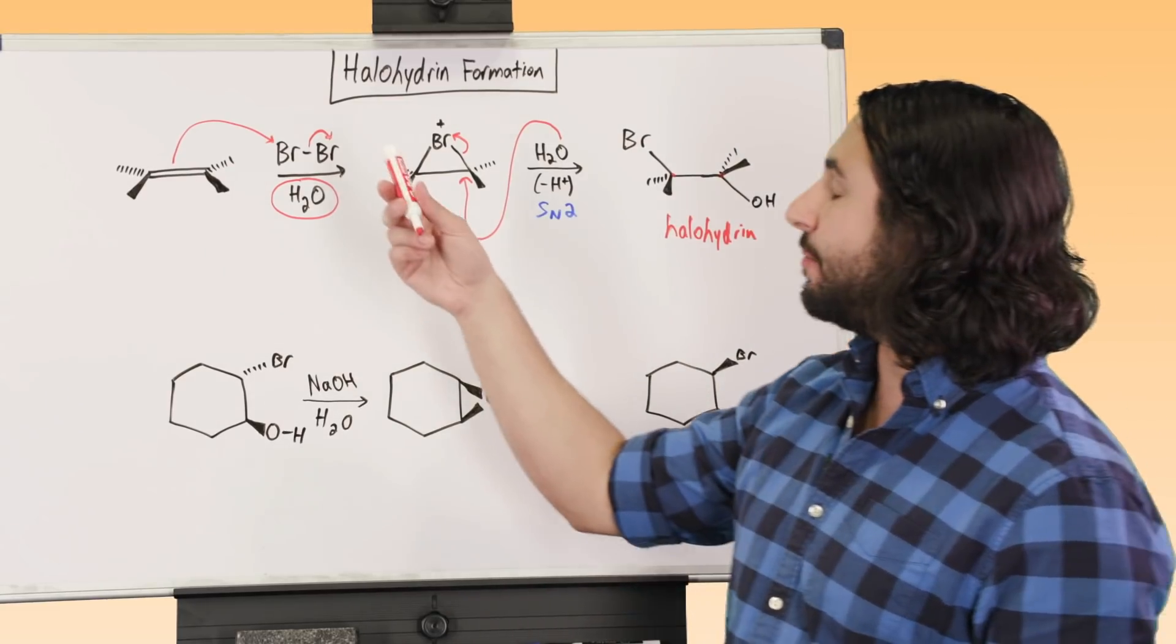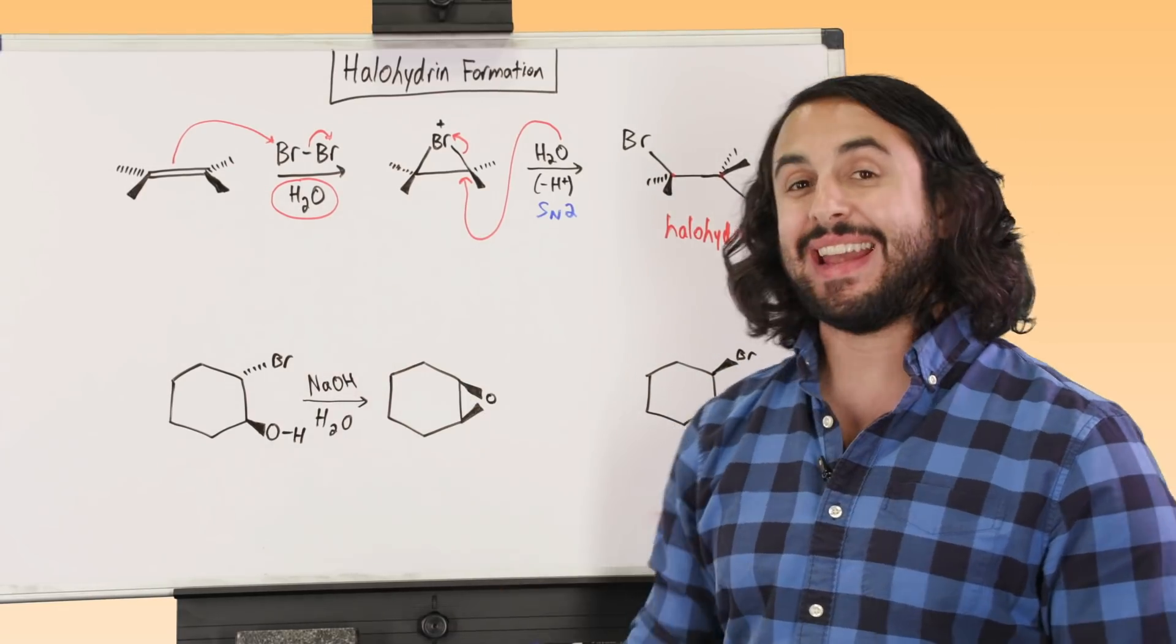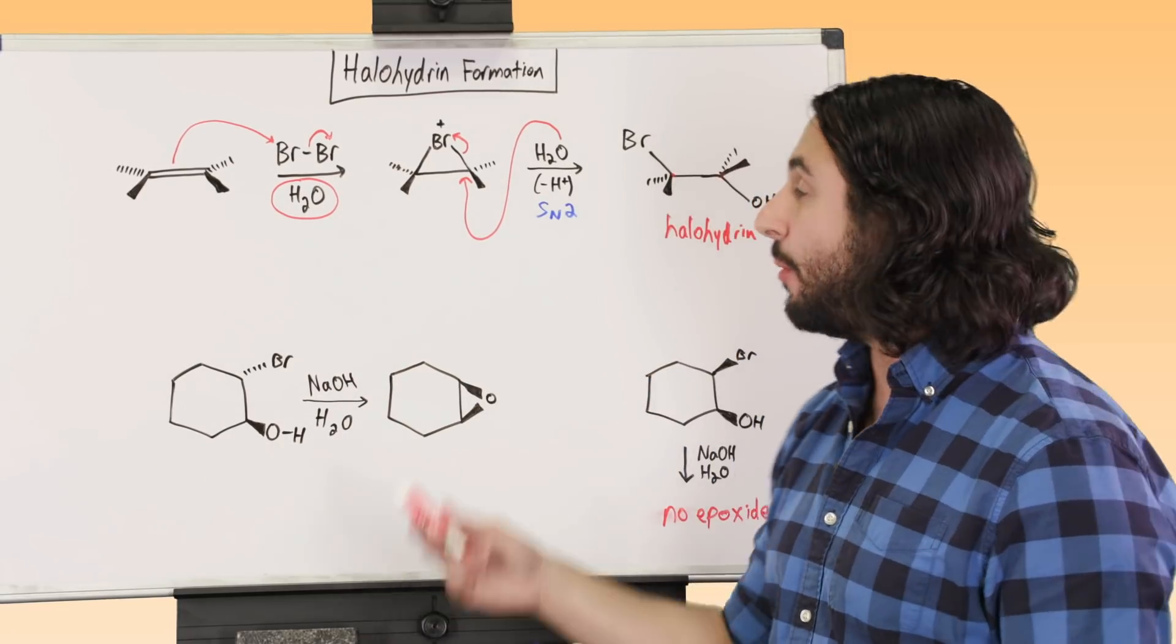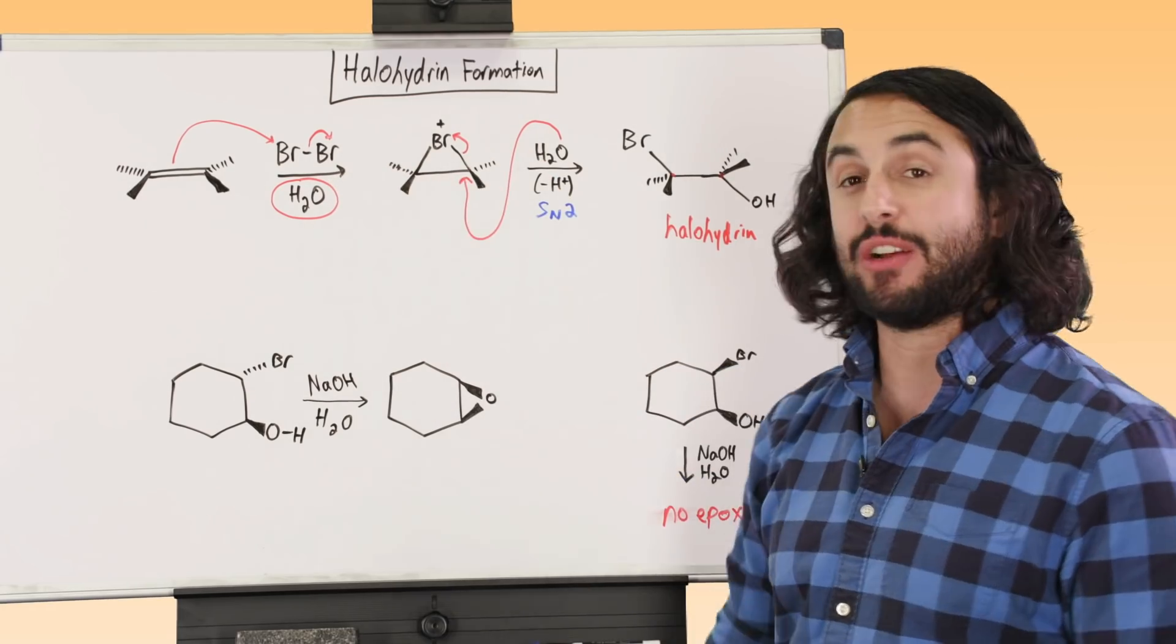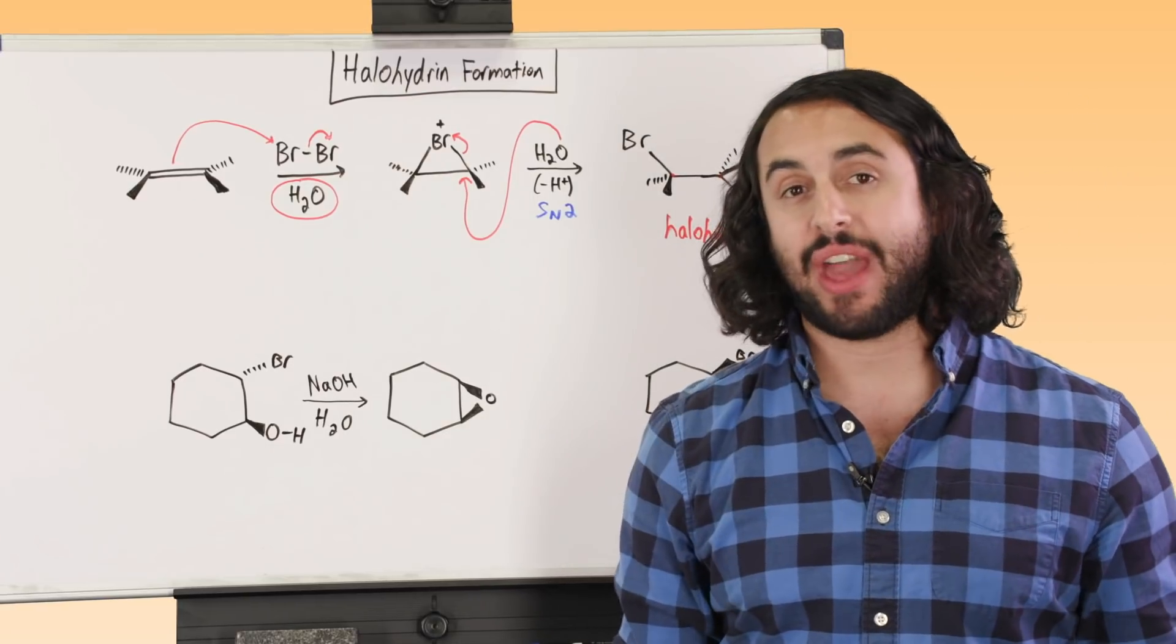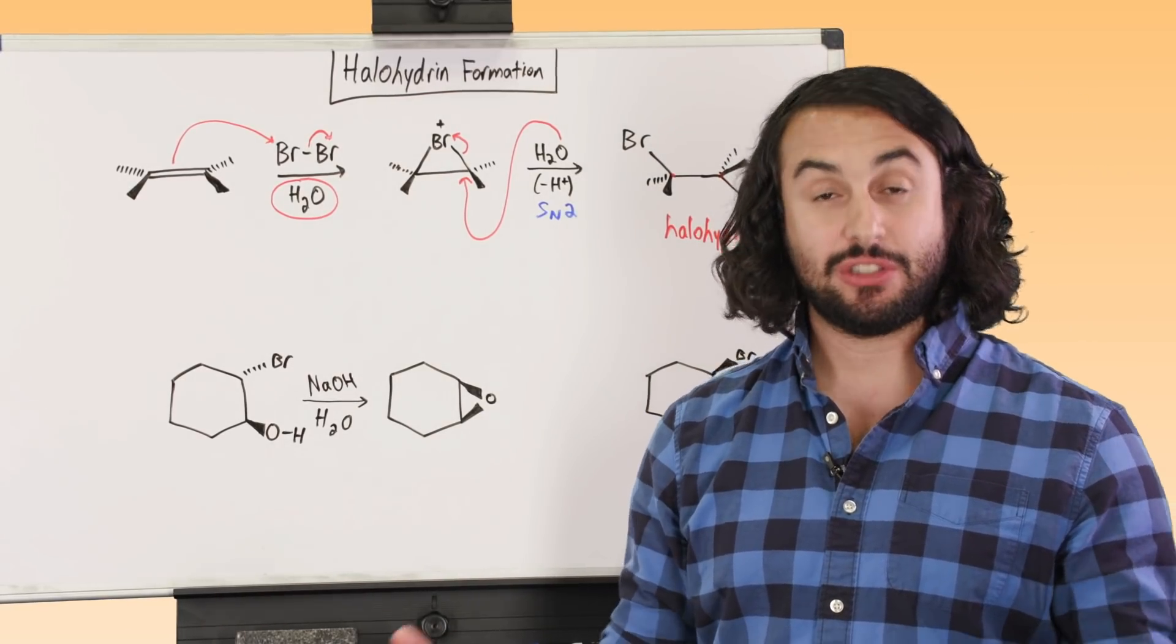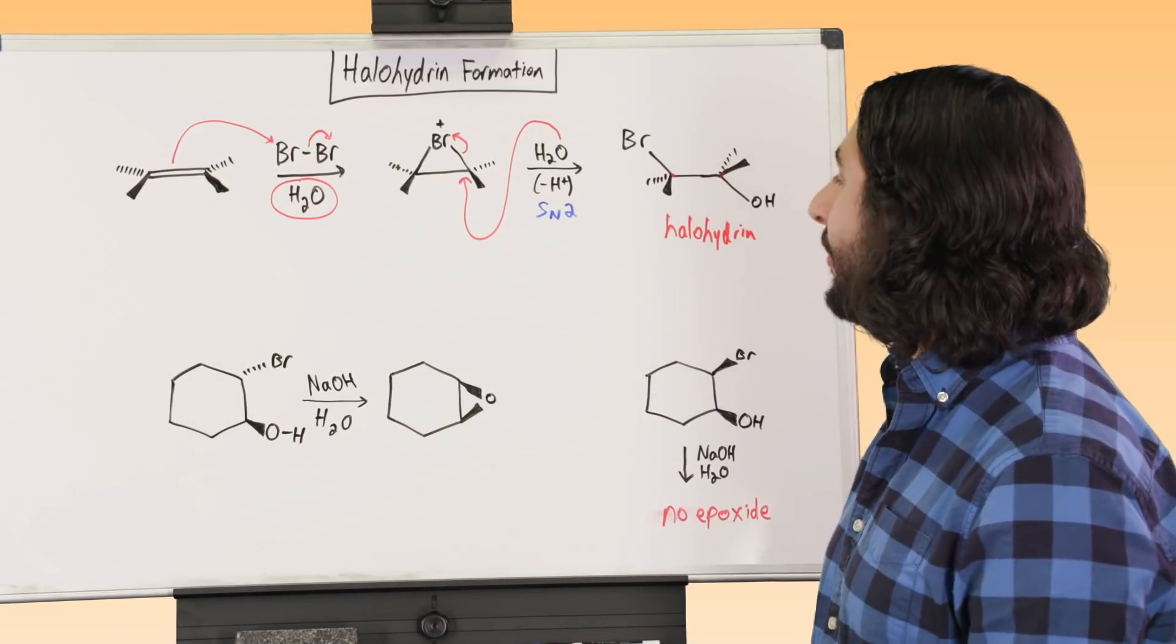And so this is the way that we're going to make a halohydrin. Once again, it is pretty much the same thing as dihalogenation, just pay attention that we are running this in aqueous conditions. And so before bromide that we have generated has a chance to go and do the SN2, in fact water is going to go and do that first. Because there's just so much water lying around, it's aqueous solvent, we've got a molecule of solvent, it's going to do it.